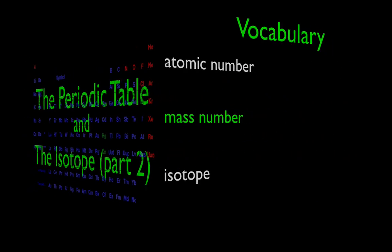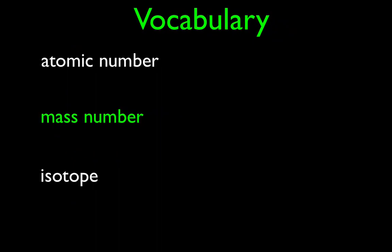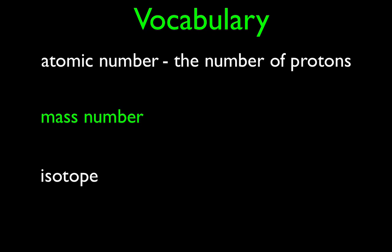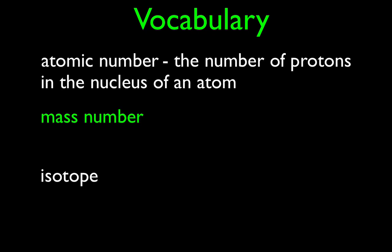Before we go on and actually solve some problems, let's review some quick important terms. First of all, we have to know what these terms mean, and the first one is atomic number. What is the atomic number? The atomic number is the number of protons in the nucleus of an atom. It is some whole number — 1, 2, 10, 20, 92. It's the number of protons, and it has to be a whole number. You can only have a whole proton.